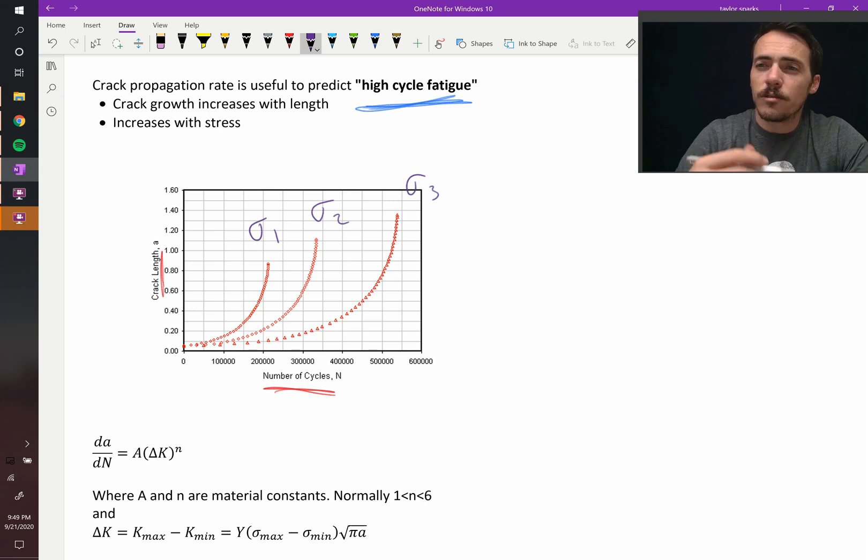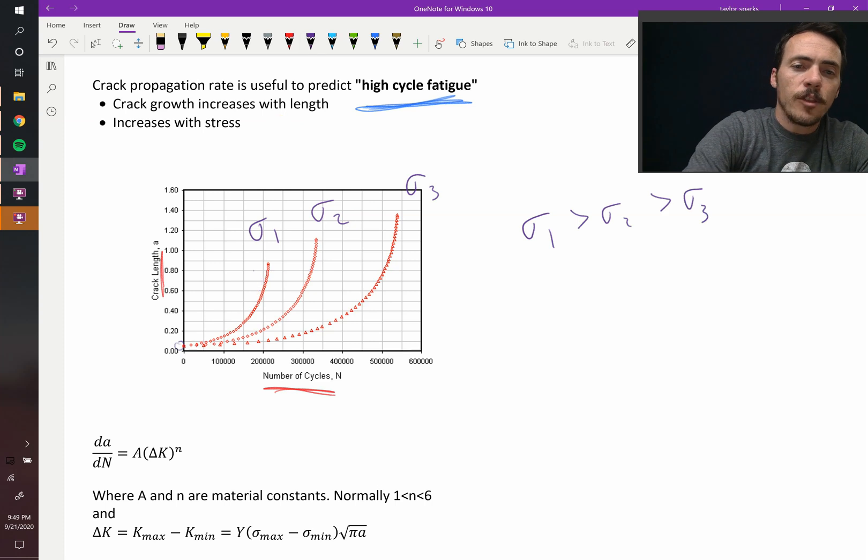Different stresses cause it to grow at faster rates. So if they all started at the same point, but this thing grew to, what's that crack length, 0.8 after only 200,000 cycles. This one took longer, and this one took longer, therefore we know that stress 1 must be greater than stress 2, which must be greater than stress 3. The other thing we notice is that when it's here, its slope is like that. When it's down here, its slope is like that.